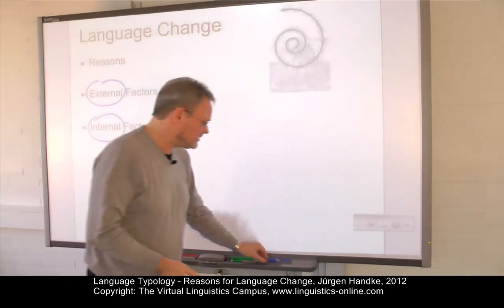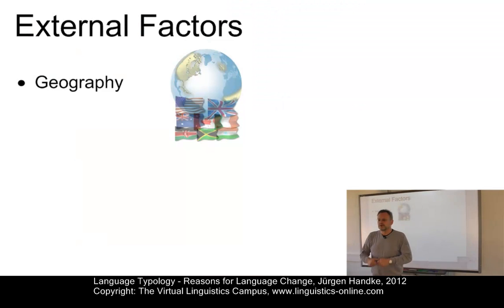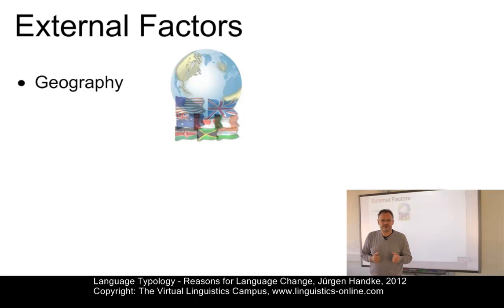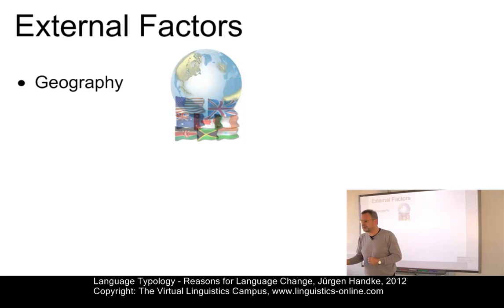Let us start with the external factors. One central factor has to do with the geographical organization of languages and their varieties. When people move away from each other, their languages or dialects will diverge. New experiences will be made, and at least the vocabularies will change.